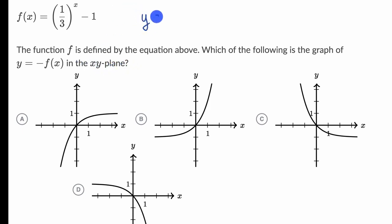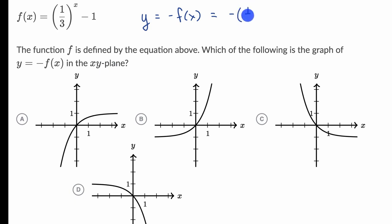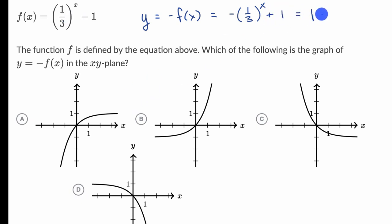Let's think about what y equals negative f of x is equal to. That's going to be the negative of the right-hand side, so we could write it as negative one-third to the x. If we distribute the negative, it'll be plus one. Or we could write it as one minus one-third to the x.